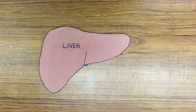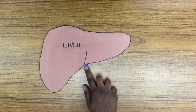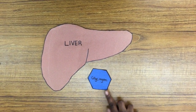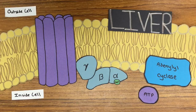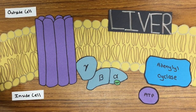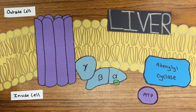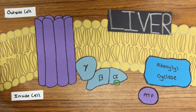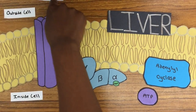The glucagon signaling pathway starts with the liver, where glucose is stored in the form of the polysaccharide glycogen. Glucagon begins the pathway by binding to a special protein receptor called a G-protein-coupled receptor, or GPCR.